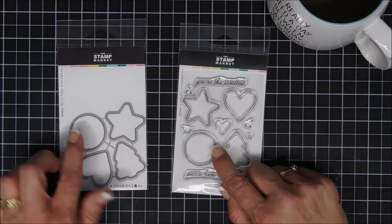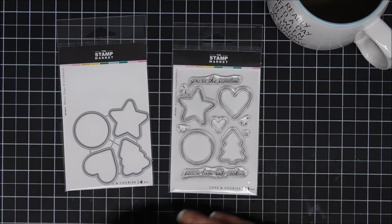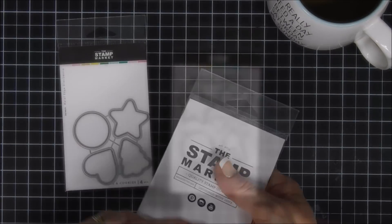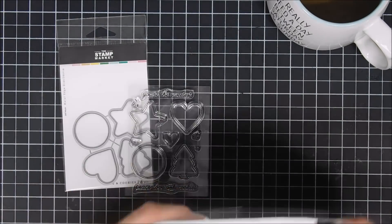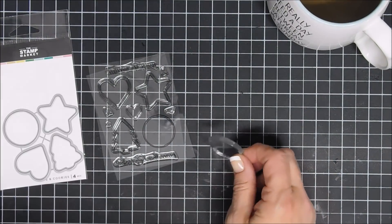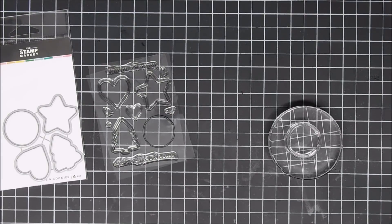This one set is Loving Cookies, super cute. The price point was great, so I picked up the coordinating dies. I thought we'd make a cookie card today. I think all month long it'd be fun to create some sweet cards. We're going to jump in and do some stamping. The only image I'm using in the stamp set is the circle cookie.